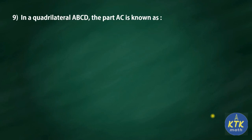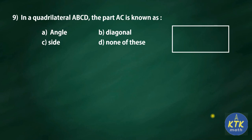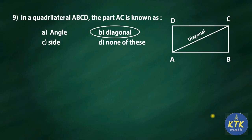Ninth question: in a quadrilateral ABCD, the part AC is known as what? Options are angle, diagonal, side, or none of these. Imagine a rectangle — a rectangle is a quadrilateral — with vertices A, B, C, D. The line segment joining the opposite vertices A and C is called a diagonal. So the answer is diagonal. Similarly, BD is also a diagonal, so every quadrilateral has two diagonals.